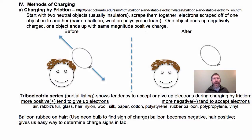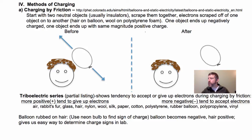Let's talk about methods of charging. The first method of charging an object — charging an object just means you're transferring charge. You can't create it, you can only transfer it. The first type of charging, the most simple to understand, is charging by friction.